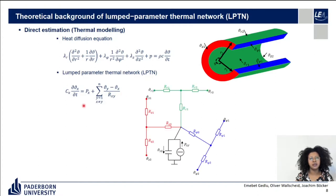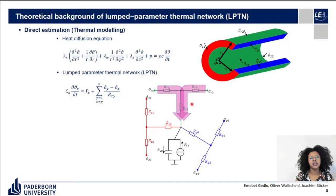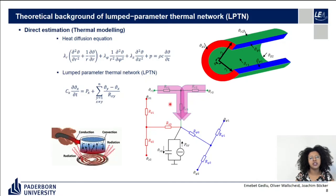The LPTN model is a first-order differential equation analogous to an electric RC circuit. Instead of parameterizing thermal resistances and heat capacitors using material and geometrical data, in our case we use parameter identification. To model thermal resistances using system identification, it's important to know the mode of heat transfer between parts — whether it is conductive, convective, or radiative. In our case, the effect of radiation is neglected because it is very small compared to conductive and convective heat transfer.